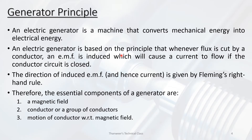The rate of change of flux — if you have a conductor moving — determines the induced EMF. The direction of induced EMF, and hence current, is given by Fleming's right-hand rule. The essential components of a generator are: a magnetic field, a conductor or group of conductors, and motion of the conductor with respect to the magnetic field.